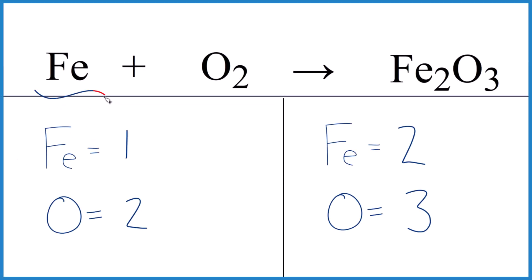Let's balance the equation Fe plus O2 yields Fe2O3. So I've counted the atoms up already, and what we're going to do is start with the Fe2O3 because oxygen's by itself and iron's by itself here. Leave those until last.